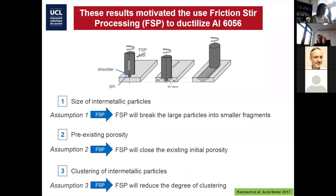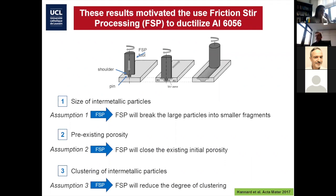Intermetallic particles control ductility — defining ductility here as fracture strain. What could we do to improve the material knowing that? My colleague Ode Simard, an expert in friction stir welding and friction stir processing, proposed to use friction stir processing to mix the material and modify the intermetallic particles. We had three objectives: first, by this intense mixing, we would probably break the large particles into smaller particles; second, could friction stir processing close the initial porosity, which I've shown may have a significant impact on ductility; and finally, could it help in declustering the intermetallic particles?